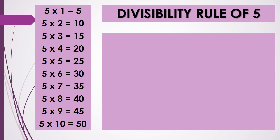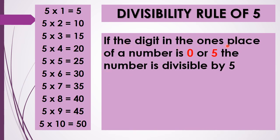The next is the divisibility rule of 5. Here you can find the multiplication table of 5. In the product, we can find that the 1's place has 5, 0, 5, 0, and so on — only either 5 or 0. So the divisibility rule of 5 is: if the digit in the 1's place of a number is 0 or 5, the number is divisible by 5.